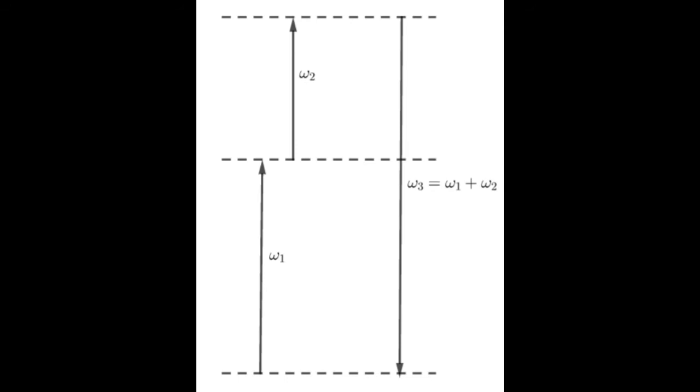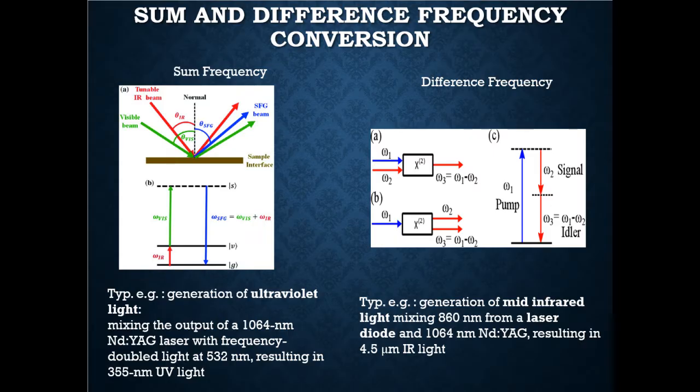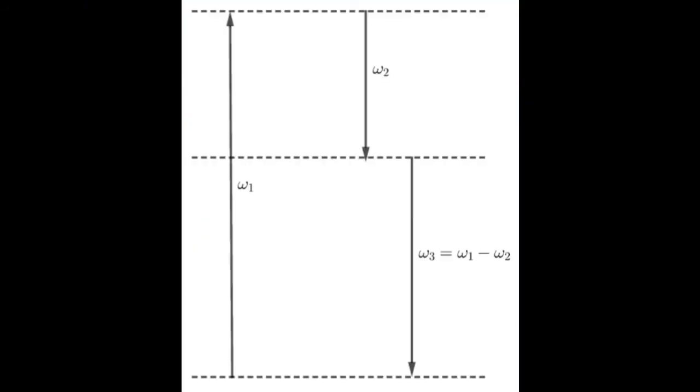On the other hand for the difference frequency two input modes of omega 1 and omega 2 which translate to two photons of energies h cross omega 1 and h cross omega 2. What happens here is quite interesting. The higher energy photons are absorbed by the atoms which get excited. Now, under the presence of the second photon of lower energy this excited state undergoes a two-step de-excitation. This is a stimulated emission.